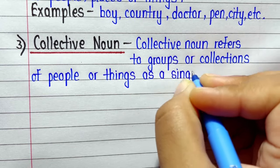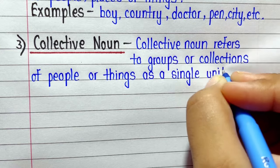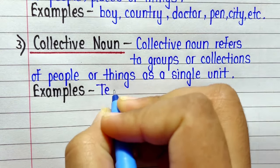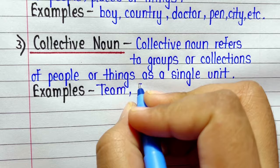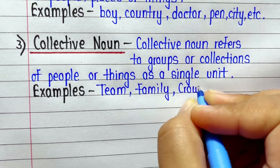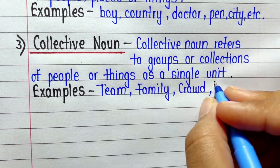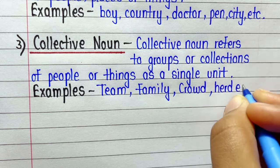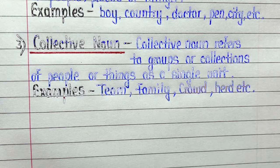Number three: Collective Noun. Collective noun refers to groups or collections of people or things as a single unit. Examples: team, family, crowd, herd, etc.